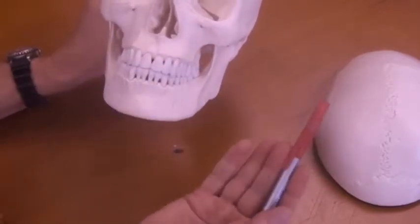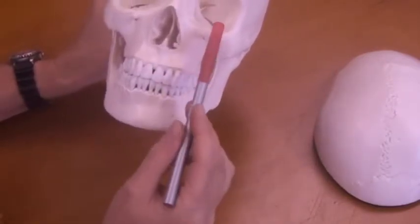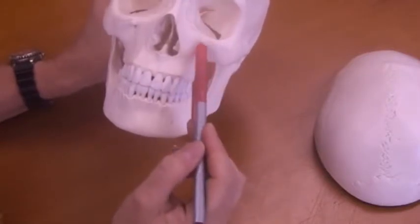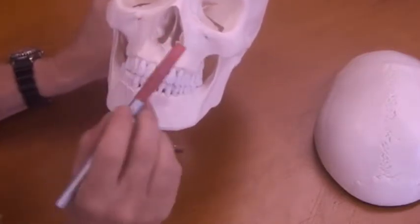So anytime you have the name foramen, it means a hole. And infraorbital is going to mean below the orbits. So those are your infraorbital foramen.